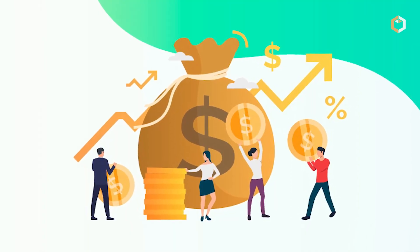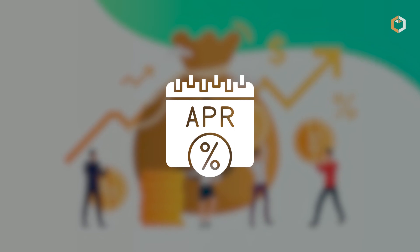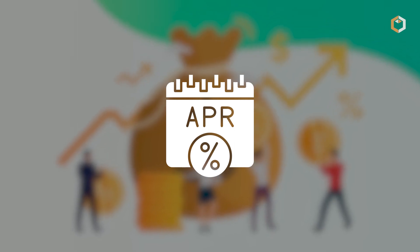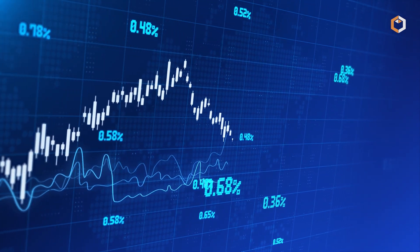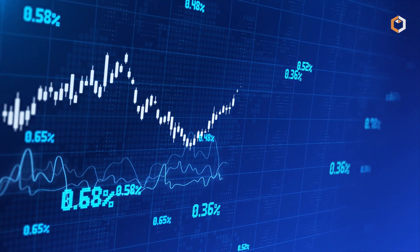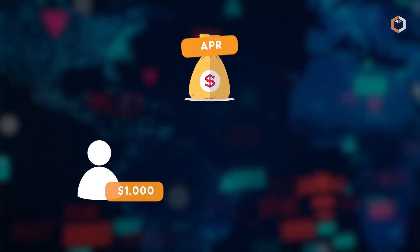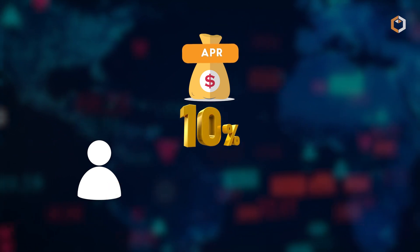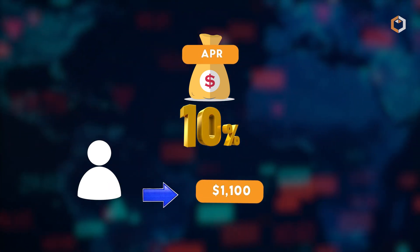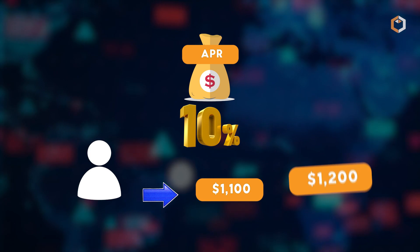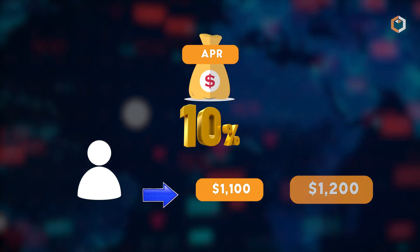APR is the simple interest rate charged by the lender or the return earned by the investor, expressed as a percentage of the amount borrowed or invested. For example, if you borrow $1,000 with an APR of 10%, you'll owe $1,100 after one year, $1,200 after two years, and so on.